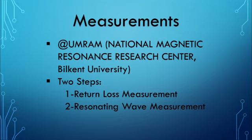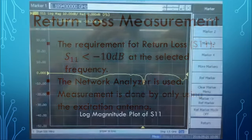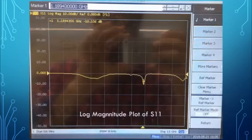The measurements are done at UMRAM. There are two steps. The first one is S11 measurement — in other words, the return loss is measured — and the second one is resonating wave detection. For the S11 measurement, the requirement for return loss is being less than minus 10 dB, meaning attenuation less than 10 dB. This is measured by only one port of the network analyzer. The excitation antenna is connected to the network analyzer, and S11 is measured. As you can see, the center frequency is approximately 1.189 GHz with 10.1 dB attenuation.